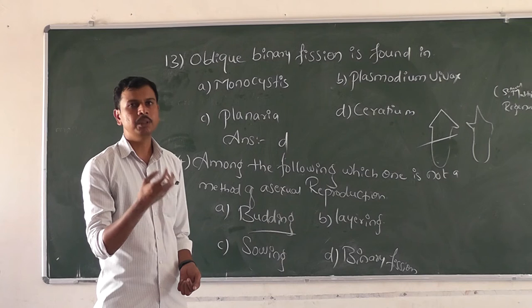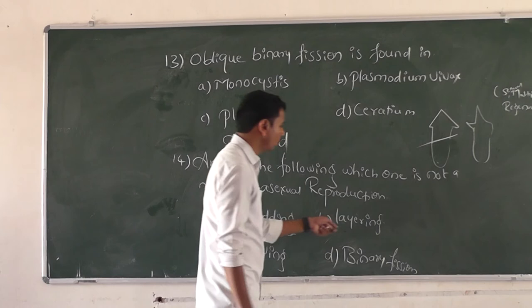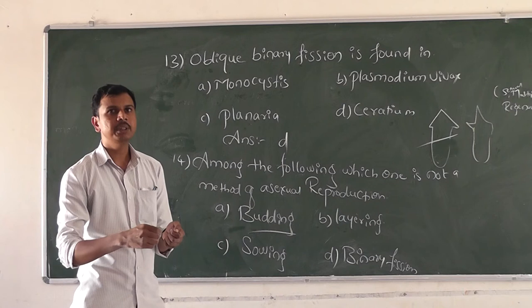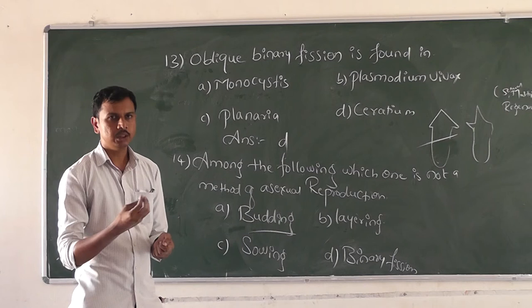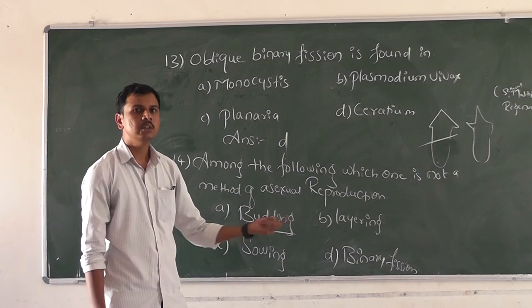In budding, bud formation takes place on the parent body, and after maturation it separates and grows into a new individual. In layering, a stem is separated from the plant and kept in the soil until it produces roots, then brought out — that is layering.